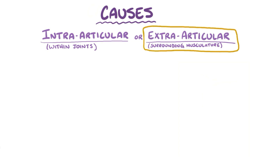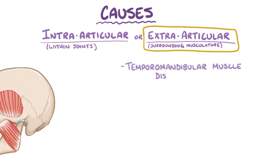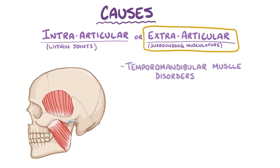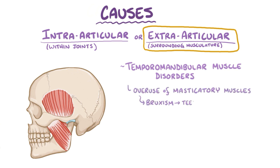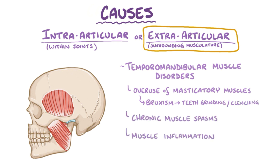Extraarticular causes are also called temporomandibular muscle disorders, and they include things like overuse of the masticatory muscles, like in bruxism — which is teeth grinding or jaw clenching — as well as chronic muscle spasms or muscle inflammation.